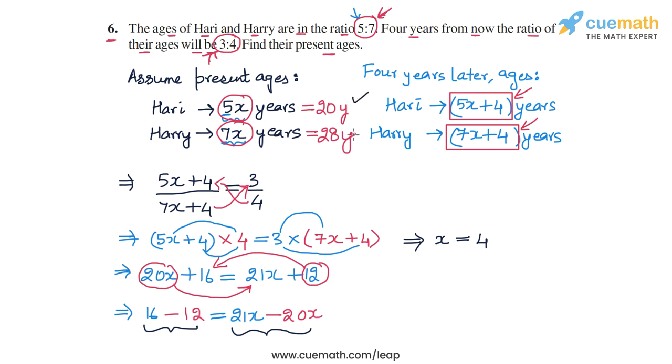So the answer to this problem is that Hari's present age is 20 years and Harry's present age is 28 years. And this completes question number 6.